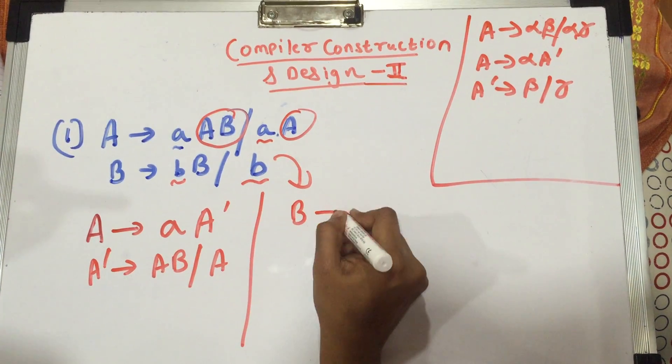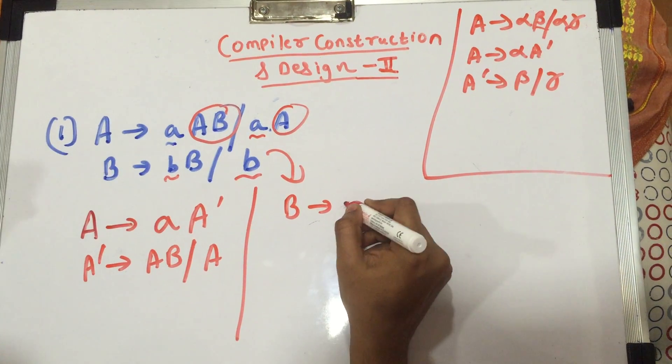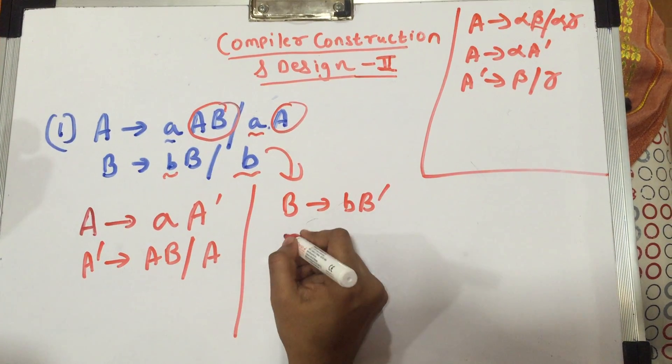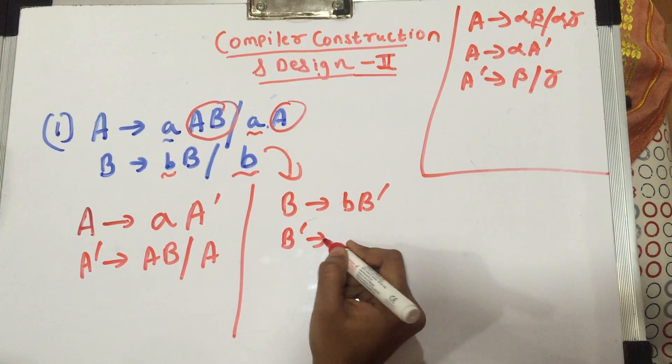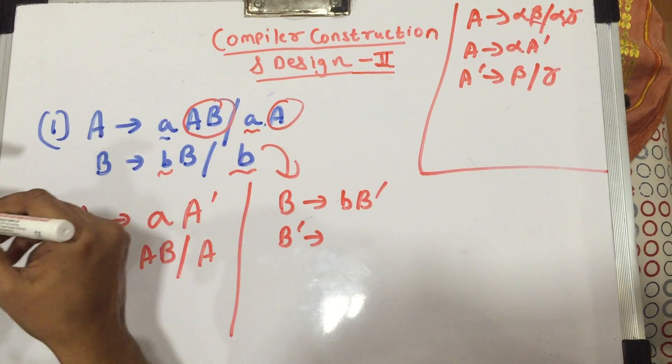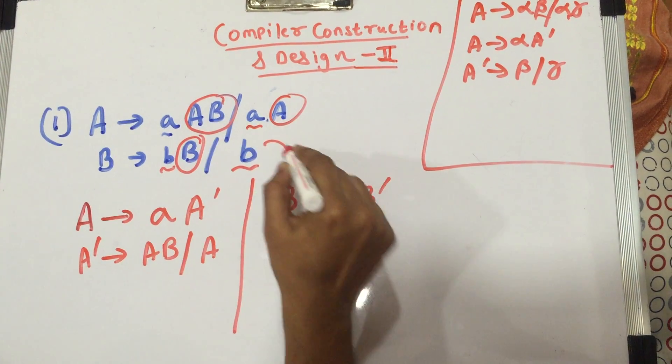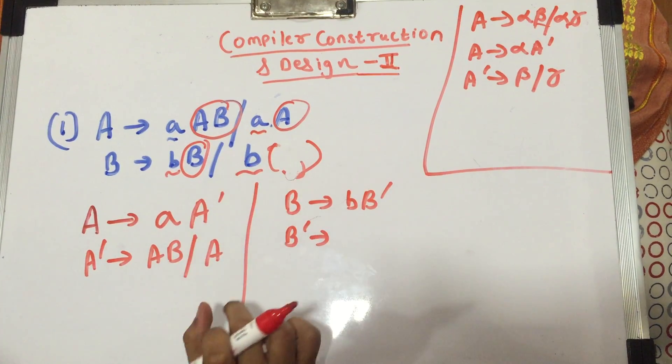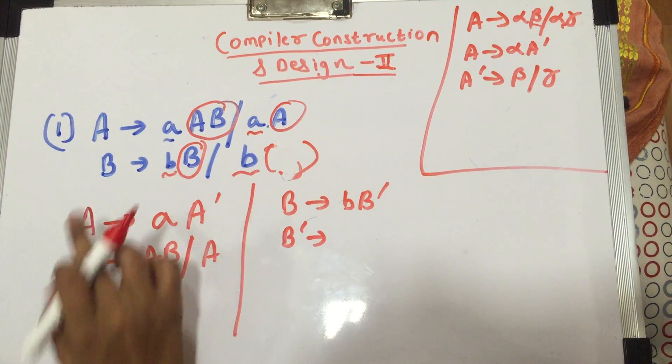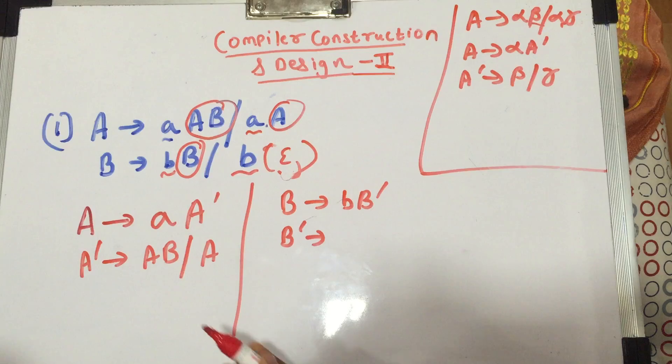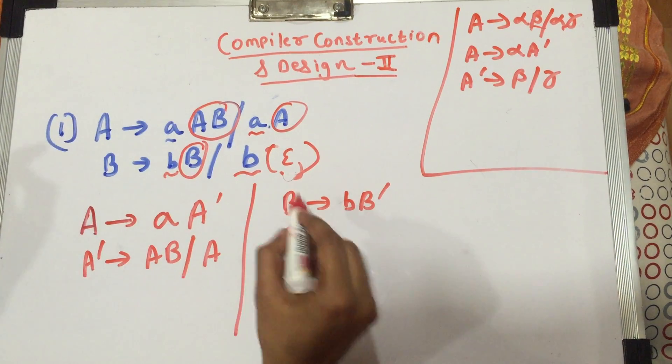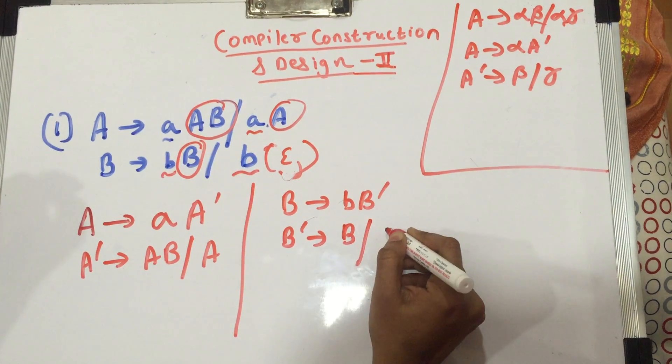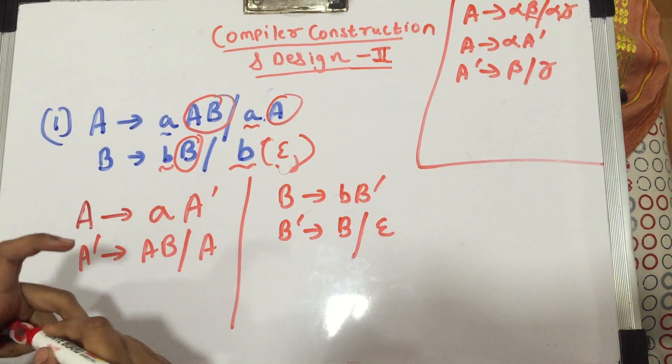So you write capital B gives you b B dash. However, for B dash, you have the uncommon part as this b, but what is uncommon here? Nothing. When you take out b common you're left with epsilon. So B dash gives you capital B slash epsilon. This is a catch you have to remember.